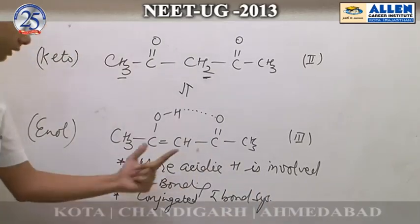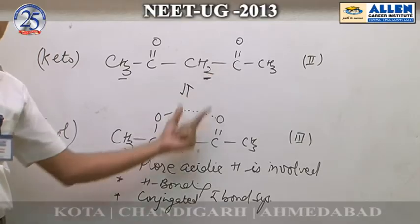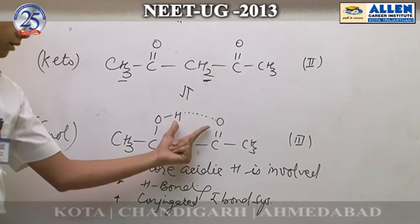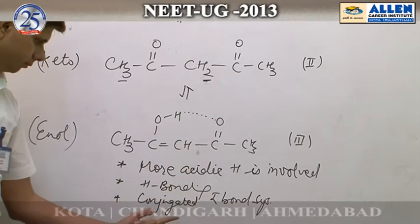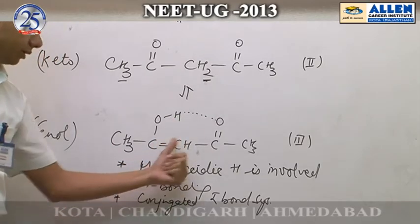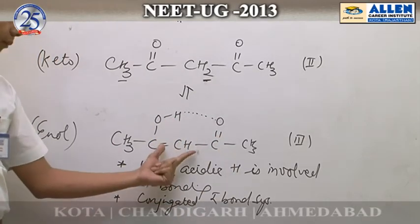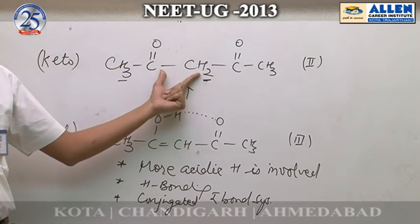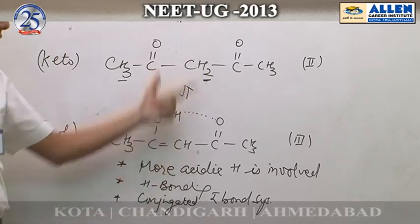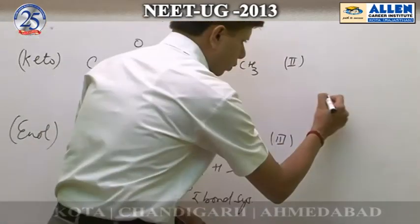All these three factors — involvement of more acidic hydrogen, hydrogen bonding resulting in six-membered chelation, and a conjugated pi bond system — all three factors make this compound more important compared to the keto form. So overall, among these three compounds, the third is most stable.